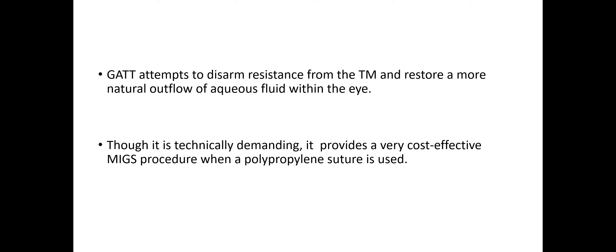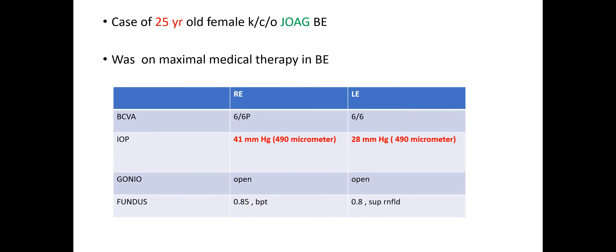GATT attempts to disarm the resistance from the trabecular meshwork and restore a more natural outflow of aqueous fluid within the eye. Though it is technically demanding, it provides a very cost-effective MIGS procedure when a polypropylene suture is used. Let's look at some complex case scenarios.